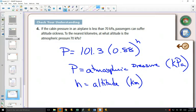So the idea here is the higher you go, the less atmospheric pressure there is. This isn't exponential growth, because our growth factor here, 0.88, is less than 1. So the higher you go, the less atmospheric pressure there is.